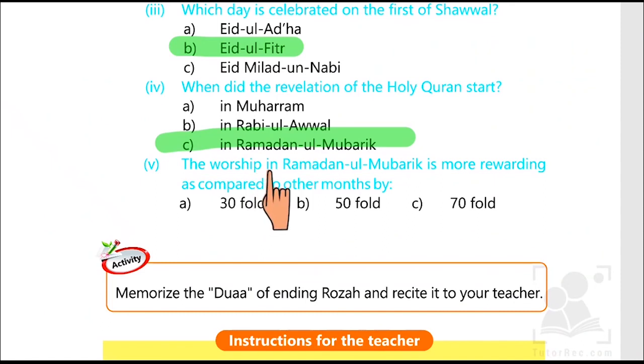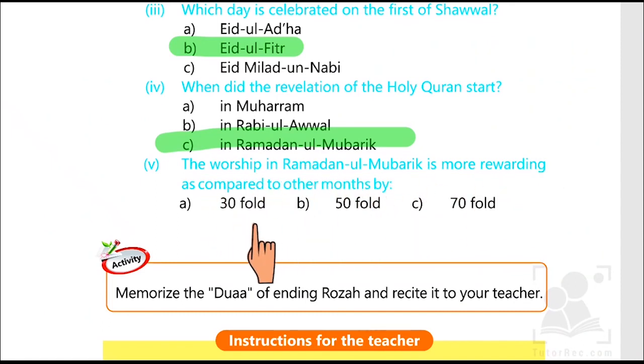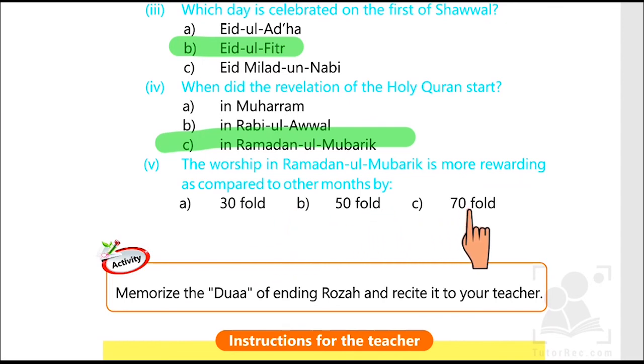The worship in Ramadan-ul-Mubarak is more rewarding compared to other months by how much — thirty-four, fifty-four, or seventy-four times? The correct answer is seventy-four times.